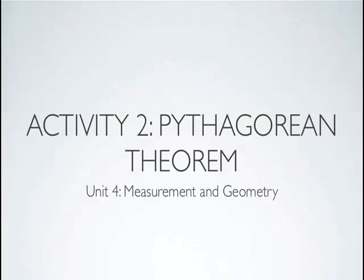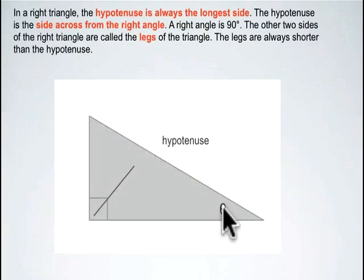Now this lesson is on Pythagorean Theorem, and the first thing that we're going to have to do to be able to use the Pythagorean Theorem is identify the sides in the right angle triangle.